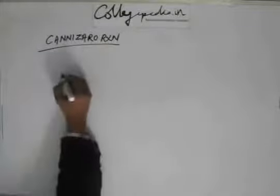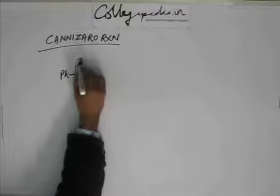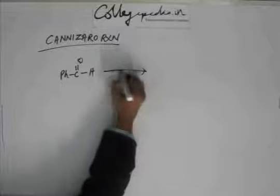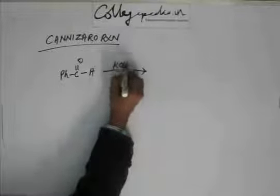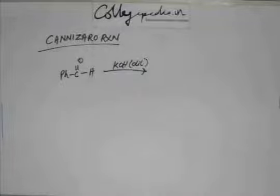Now what happens in this reaction? Suppose I have benzaldehyde. I add potassium hydroxide to this in dilute form. What will happen? I didn't add anything else, I just added dilute KOH and you have benzaldehyde. Now you think of as to what perhaps can happen.